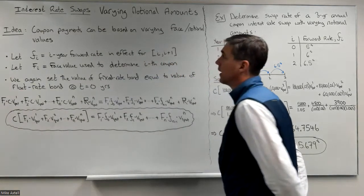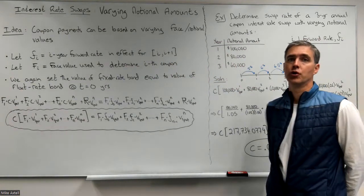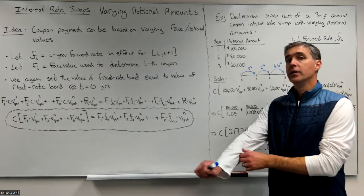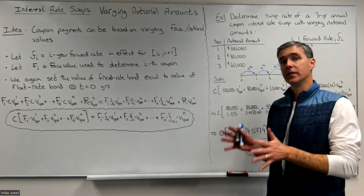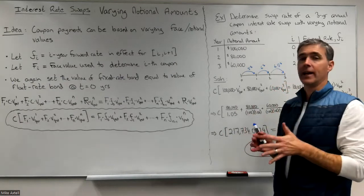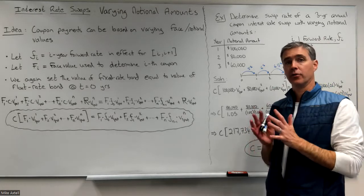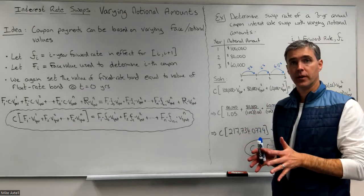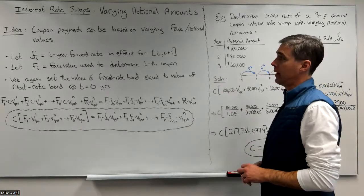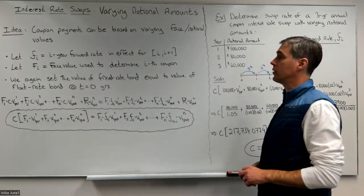We're going to have something called varying notional amounts. The notional amount or the face value is used to calculate the size of each coupon. In the past, previous examples, we've always had a fixed face value or a fixed notional amount, capital M. Now we're going to allow that notional amount to vary, and we're going to be using forward rates as well.